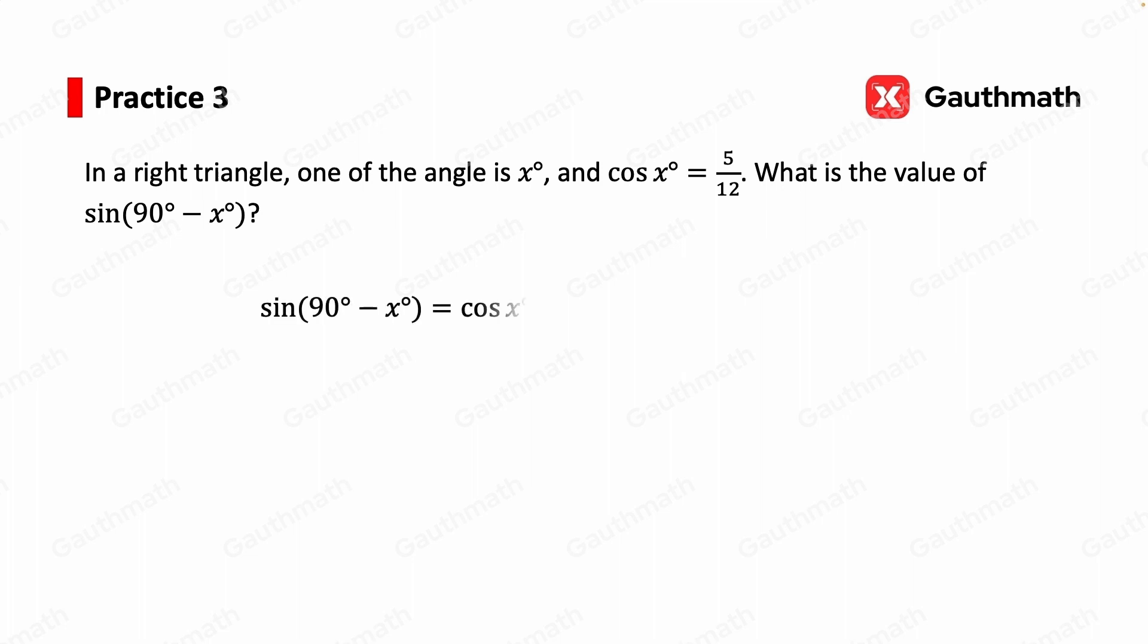Applying the complementary rule, we have sine of 90 minus x equals cosine x. Cosine x is equal to 5 over 12 as given. So the answer is 5 over 12.